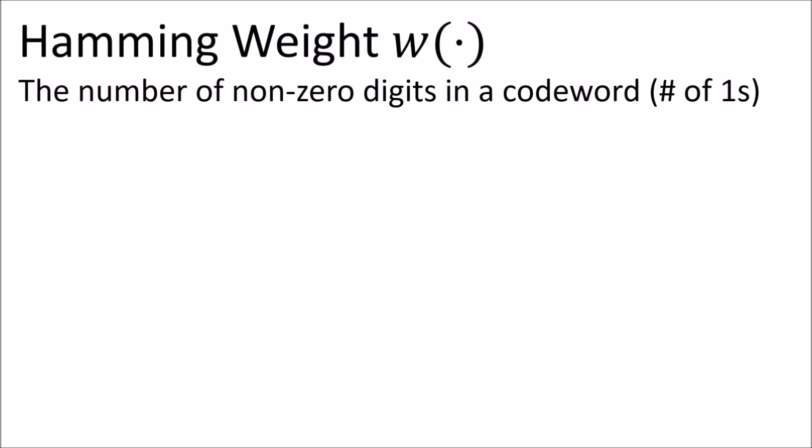The Hamming weight is just a count of how many nonzero digits are in a given code word. For the binary codes we're dealing with, this is the same as just counting the number of ones.